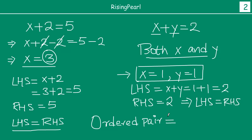Ordered pair ka matlab hai, friends — when we handle two variables, we need one value for x and one value for y. What we do is: an ordered pair means you open a bracket, write one value for x, then a comma, then one value for y. So the first value before the comma is x's value, and after the comma is y's value.